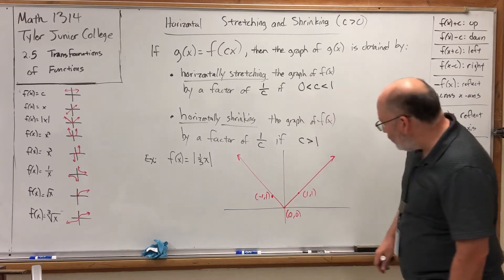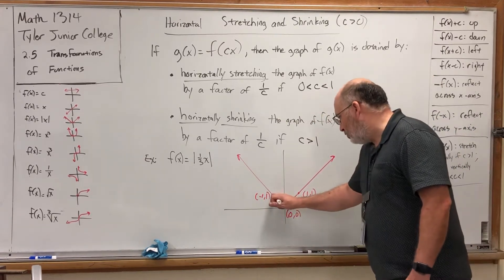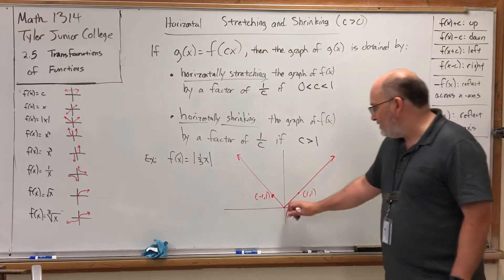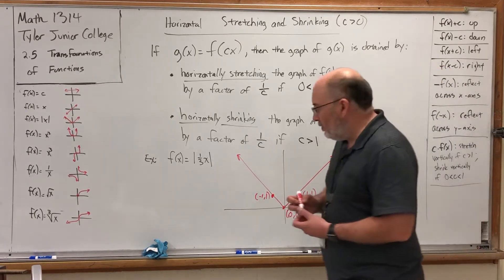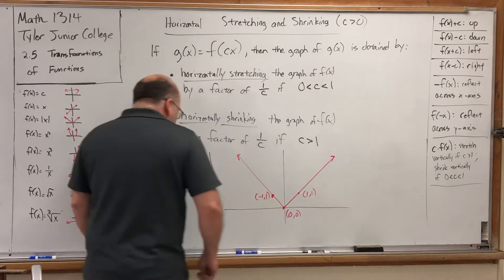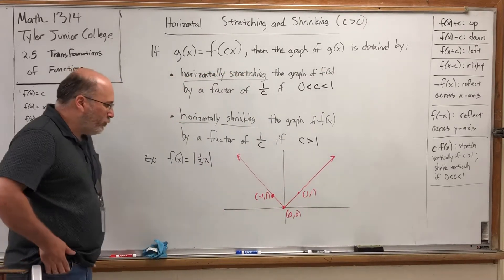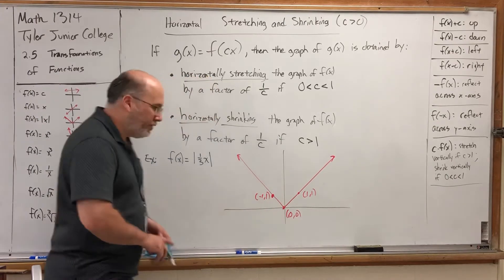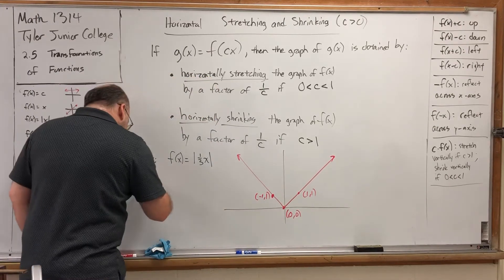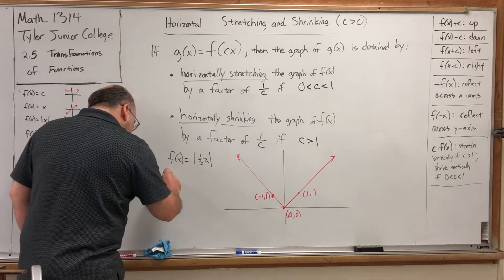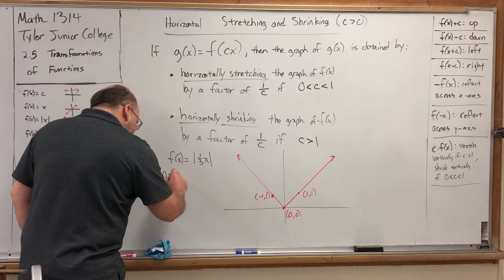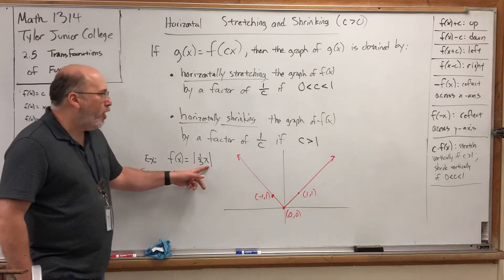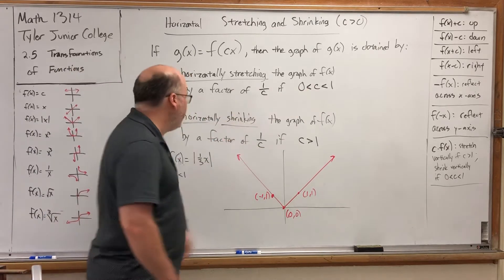We could choose more points like (2, 2) or (−2, 2), but keeping track of these three and knowing that the shape is a V will help us. So what transformation would be invoked by multiplying the X by one-third? Since 0 is less than one-third is less than 1 — in other words, the multiplier on the X is between 0 and 1.